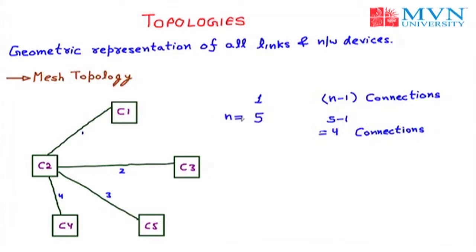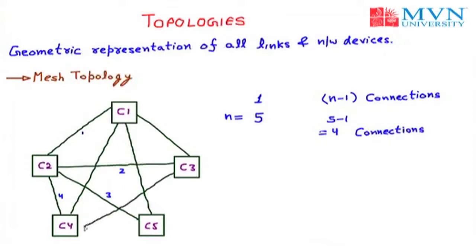Similarly, all computers are connected with each other in the same fashion. C1 is connected with C2, C4, C5, and C3. C3 is already connected with C1 and C2, and I connect it with C4 and C5 also. C5 is connected with C3, C1, C2, and now C4. C4 is already connected with all the computers.